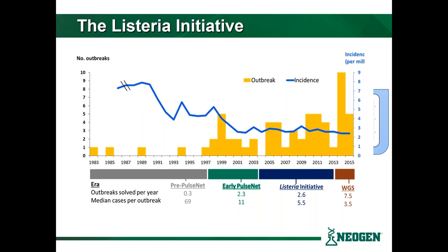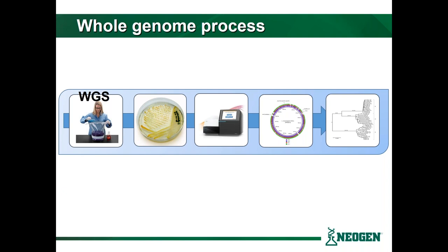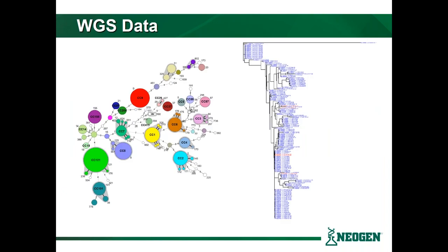WGS also helps eliminate previous isolates that would have been considered the same, easily identifying them as not being the same. With whole genome sequencing, we're still doing an enrichment — you still have to go through an isolation step, pick a colony, go through a DNA library prep, and put that on the sequencer. You're lining up all those A, T, C, and G base pairs, build that genome, put it all together, and then compare it against other isolates either in your dataset or within GenomeTracker.